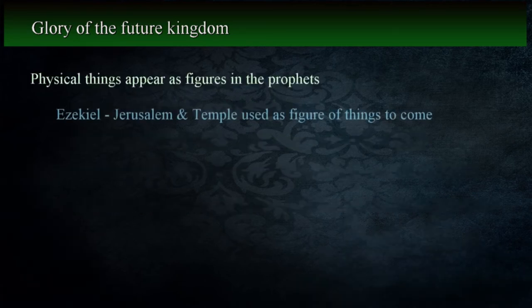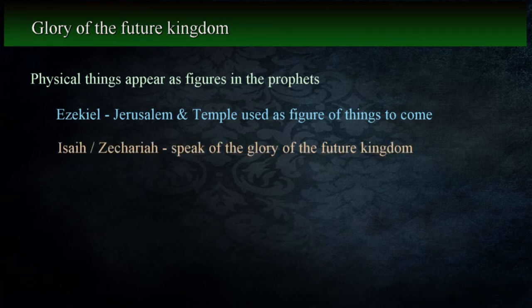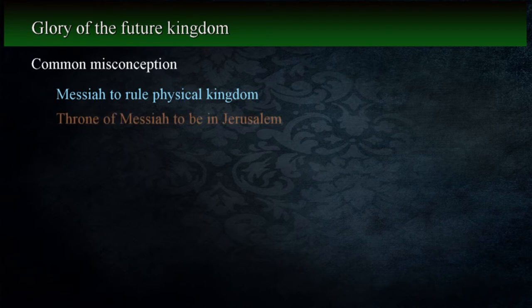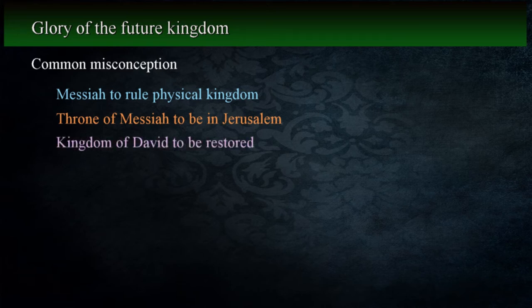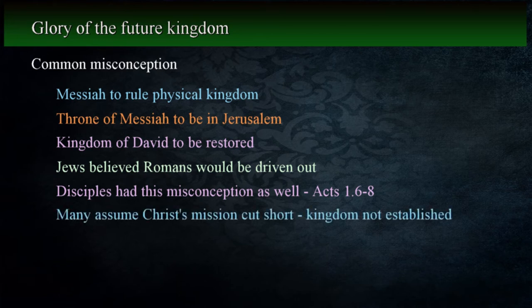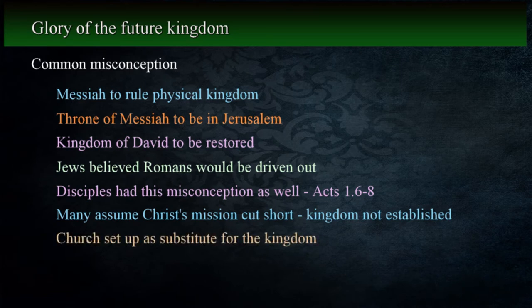In the writings of prophets such as Ezekiel, we see God using images of physical things such as the city of Jerusalem and the temple as figures of things to come. Isaiah writes in terms of the future kingdom in glowing terms, as does Zechariah. Based on statements that appear in the prophets, there's a common misconception that one day God's people will have a restored kingdom ruled by the Messiah who will have his throne in Jerusalem. The Jews of the first century believed that Christ was sent from God and expected him to restore the kingdom of David and drive the Romans out of the land. The apostles had this same idea as they met with Christ and asked him about it prior to his ascension in Acts 1:6-8. Because Christ didn't establish a physical kingdom like that of David, some assume that his mission on earth was incomplete. Others argue that the church was a substitution for the physical kingdom, but as we examine the writings of the prophets, we see this isn't the case.